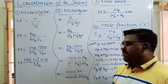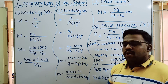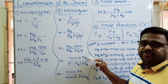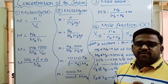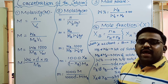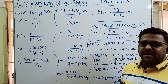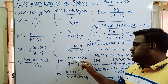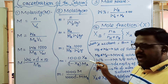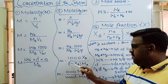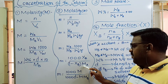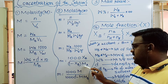The fourth formula expresses molality in terms of mole fraction of solute XB: molality equals 1000 times XB divided by (1 minus XB) times molecular weight of solvent.